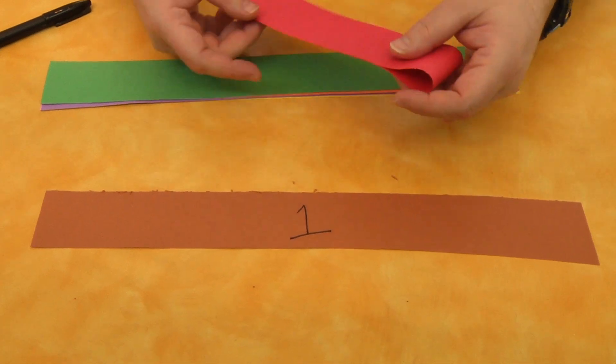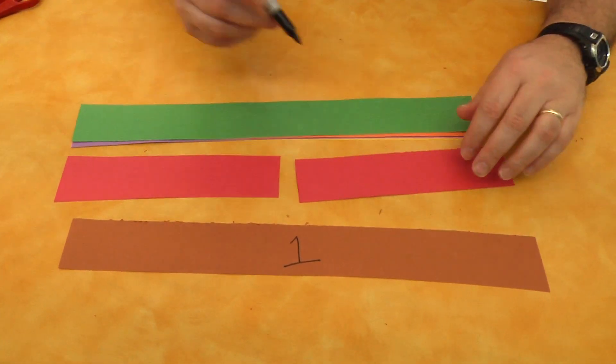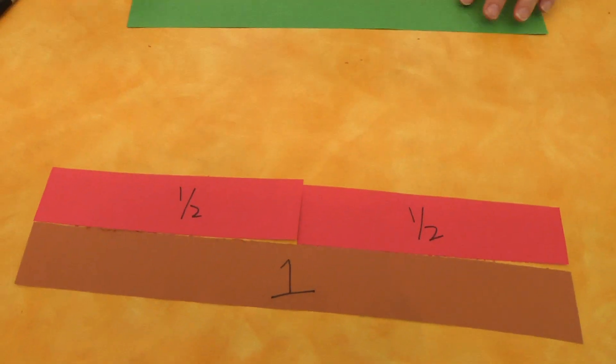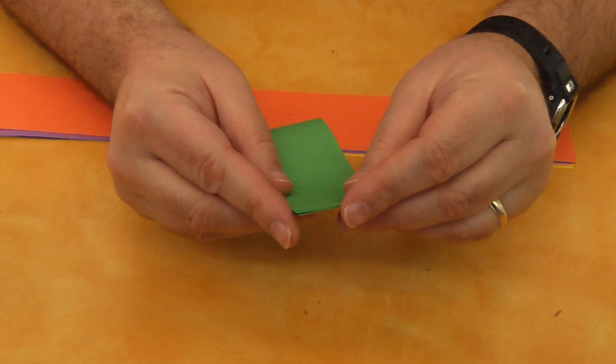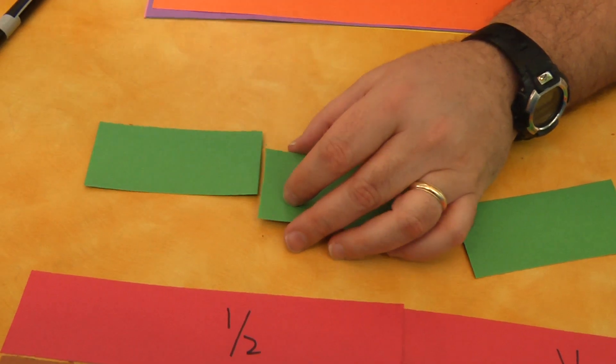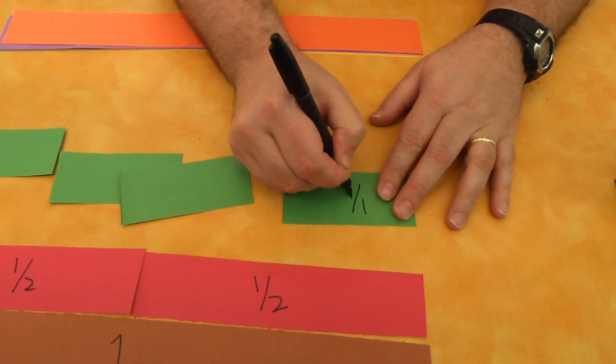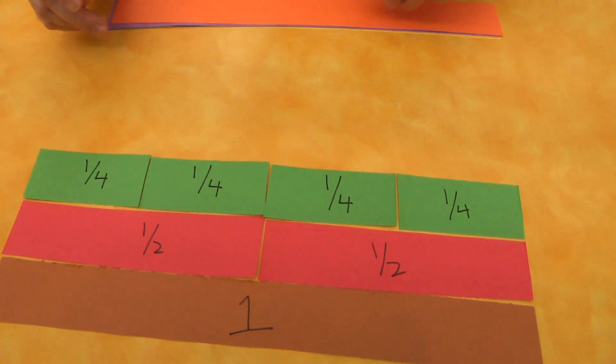Next, take a second strip and fold it in half. Cut along the fold to make two equal pieces. Each of these is one of two pieces, so we write as one over two, one half. Now take a third strip. Fold it in half, then half again, then cut along the folds. I see. So we get four pieces. And since each piece is one of four, we write it as one over four, one fourth. Now you're getting it.